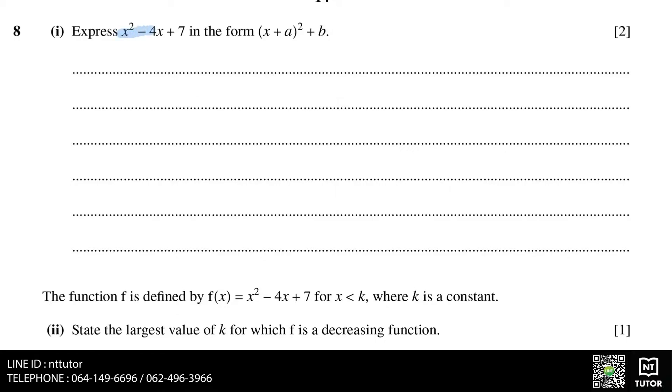If we look at x squared minus 4x, to get that, we need (x - 2) squared. x minus 2 squared is x squared minus 4x plus 4.